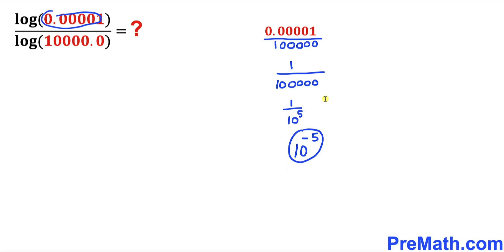Likewise, let's focus on this argument in the denominator. This is 10,000, so this could be written as 10 to the power 4. Therefore, our expression could be written as log of 10 to the power negative 5 divided by log of 10 to the power 4.